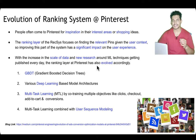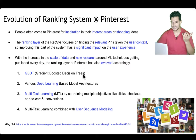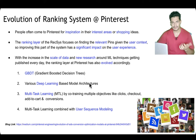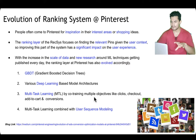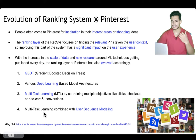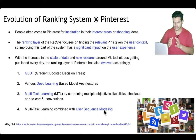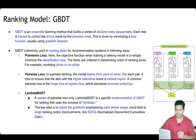With the increase in scale of data and new ML research published every day, the ranking layer at Pinterest has evolved accordingly. They started with a GBDT — gradient boosted decision tree — then moved to various deep learning architectures. They also adopted multitask learning — a single model trained for multiple objectives like click, checkout, add-to-cart, and conversion — and combined it with user sequence modeling.